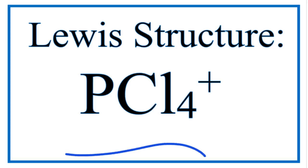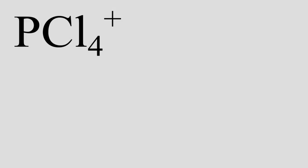To draw the PCl4 plus Lewis structure, we first need to know how many valence electrons we have. So let's add those up.